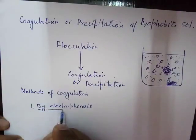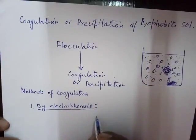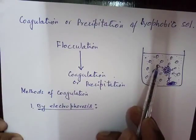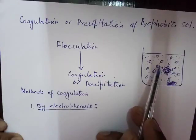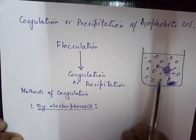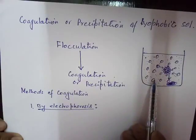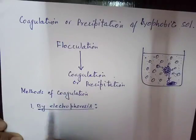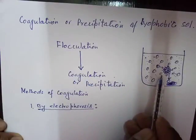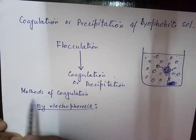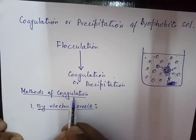Coagulation by electrophoresis: we can make colloidal particles lose their charge using electrophoresis. If the colloidal particles are positively charged, they will move towards the negatively charged electrode, lose their charge, and settle down to form a precipitate. Coagulation will take place, and by electrophoresis, colloidal particles can be separated from the dispersion medium.